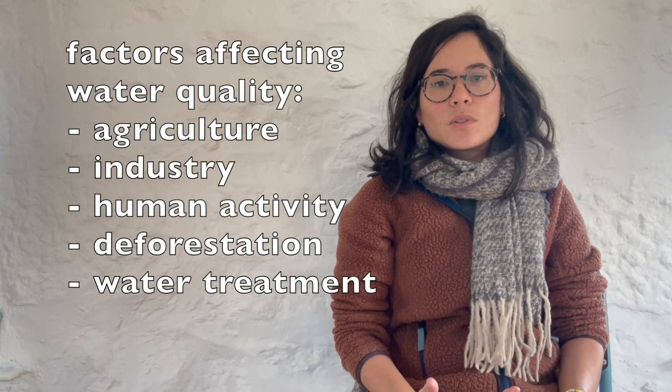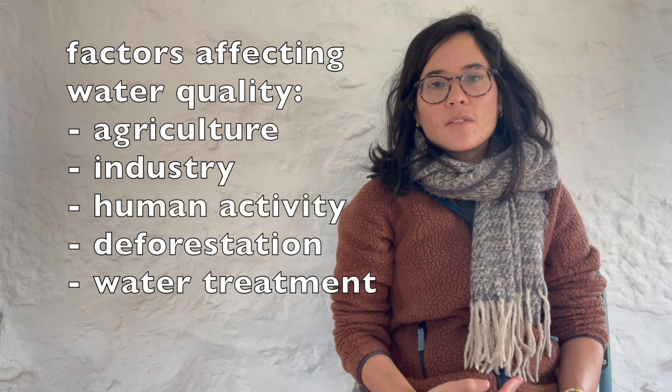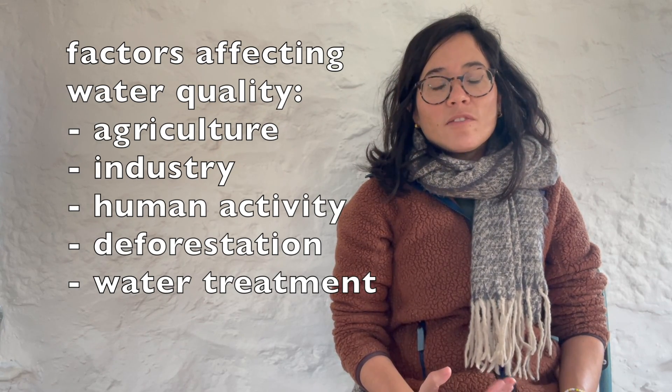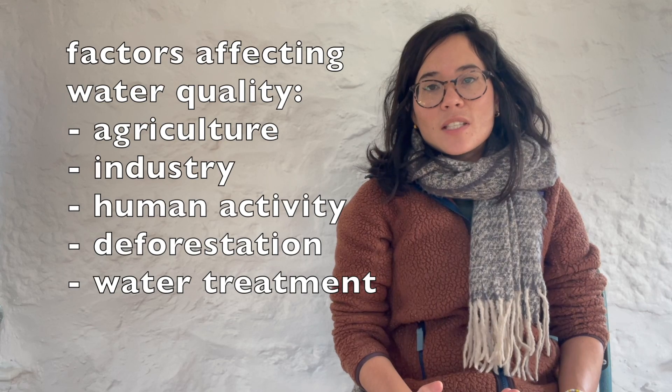So broadly speaking, what factors will affect water quality? We can divide them into agricultural ones, industrial ones, general human activity, deforestation — which means cutting down trees — and then we'll be looking more at water treatment, both how it can improve water quality but also reduce it if not carefully managed.